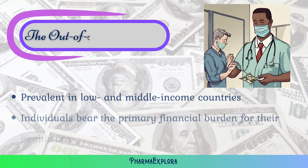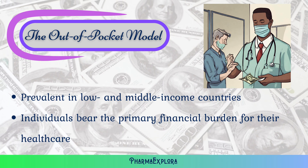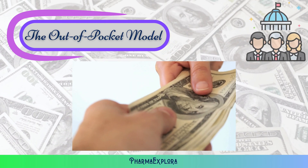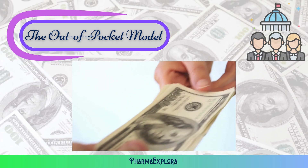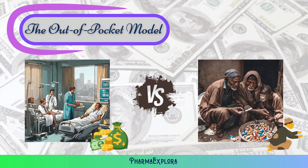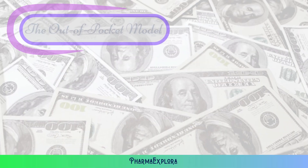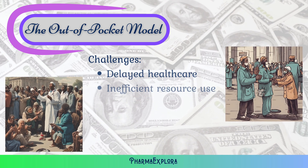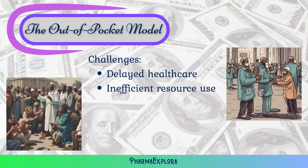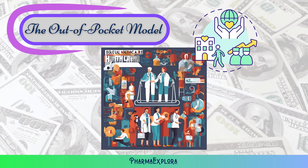The out-of-pocket model is prevalent in low- and middle-income countries, where individuals bear the primary financial burden for their health care. In this model, people directly pay for health care, and the government's role is mainly to set rules and provide minimal financial help. This system depends on market forces, causing uneven access and care quality based on income. Financial obstacles impact vulnerable groups, making health differences. Though it's easier for governments, issues like delayed care and inefficient resource use arise. Initiatives aim to increase financial help, encourage prepayment plans, and improve regulation. Grasping this model is crucial for pushing for fair health care access and supporting lasting solutions in these regions.